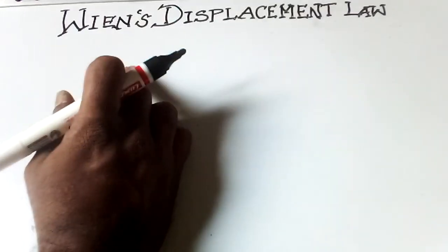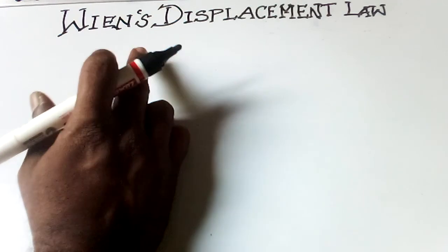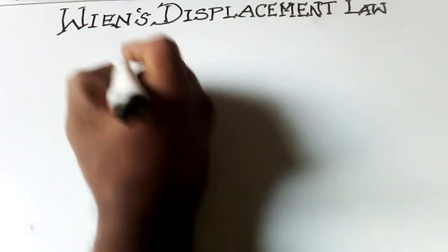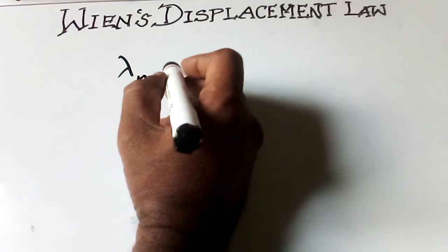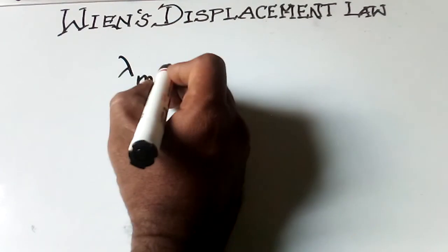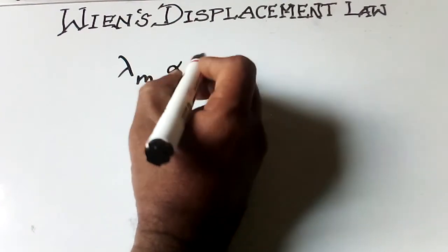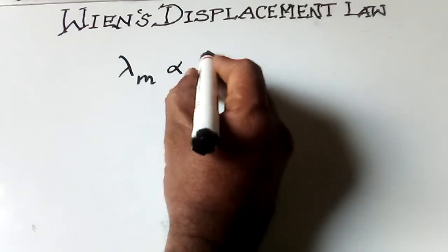Wien's Displacement Law. According to this law, the wavelength of maximum density of emission of a black body radiation, lambda m, is inversely proportional to the absolute temperature of the black body.